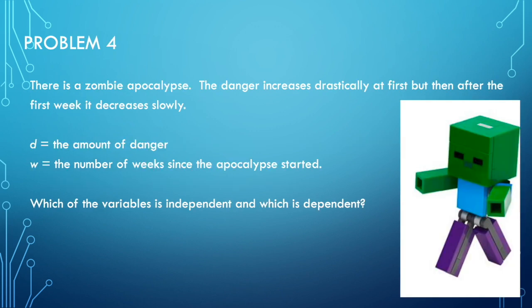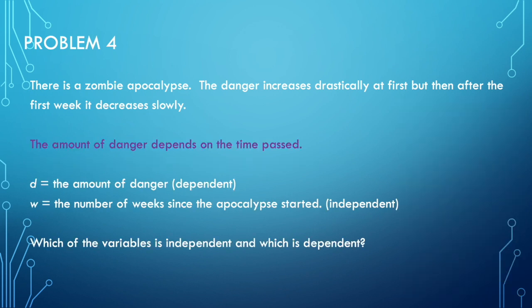Problem four: there is a zombie apocalypse. The danger increases drastically at first, but then after the first week it decreases slowly. The amount of danger depends on the time that has passed. So the amount of danger is dependent and the number of weeks since the apocalypse started is independent.